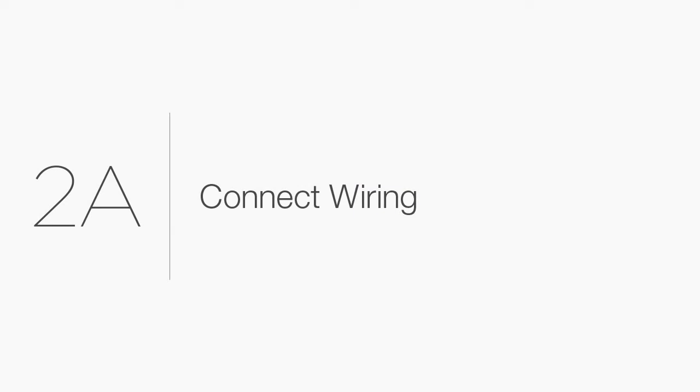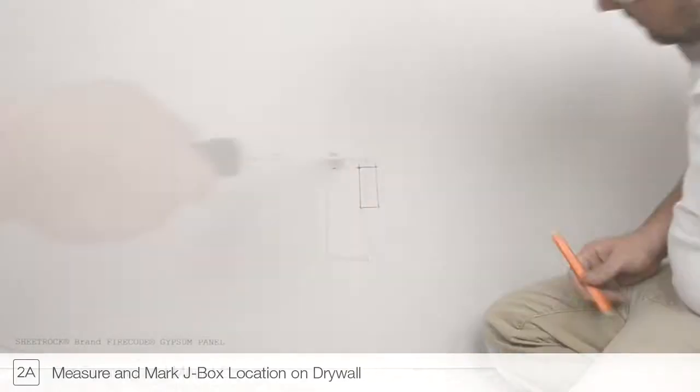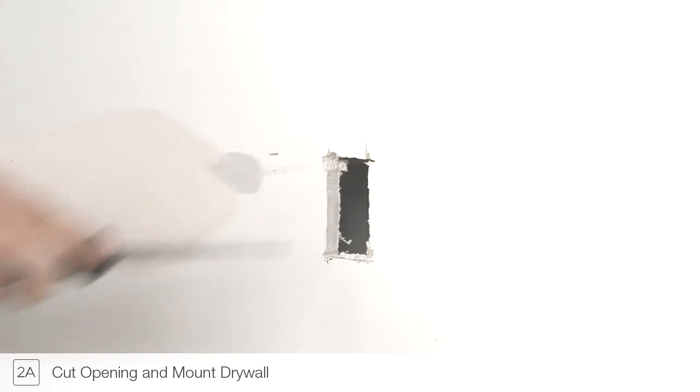Step 2A. Locate and mark the position of the power feed junction box. Cut the drywall using a jab saw or other appropriate tool to expose the junction box.